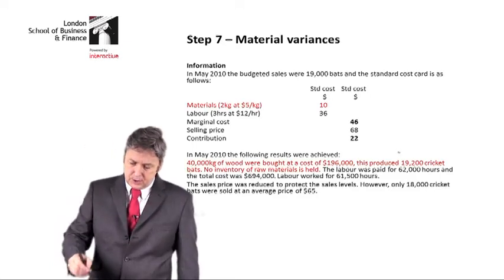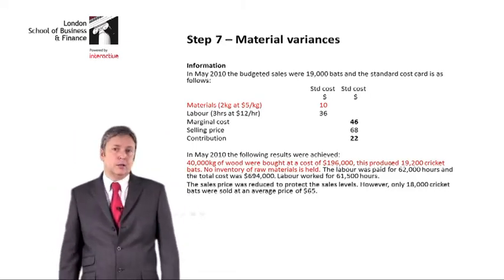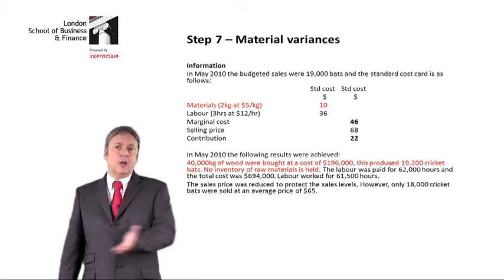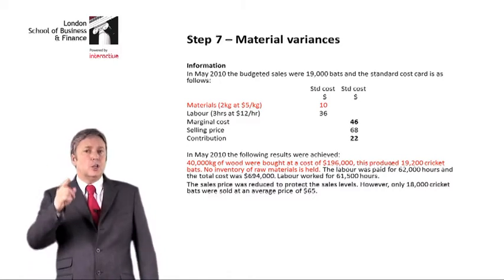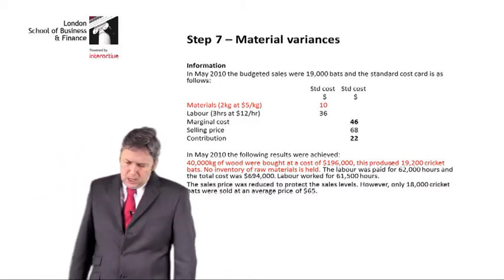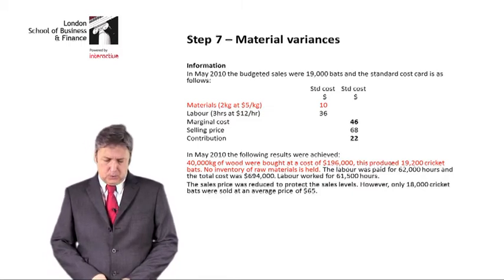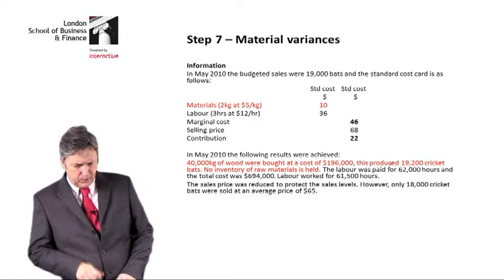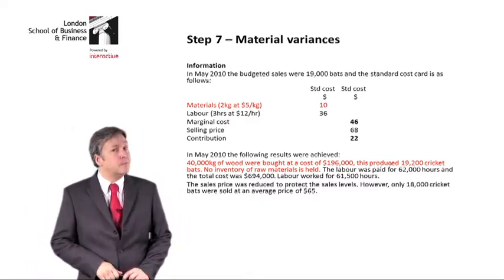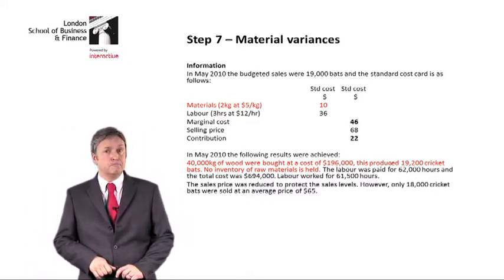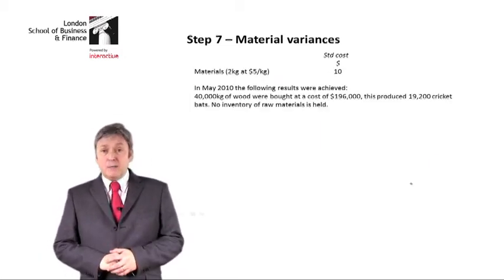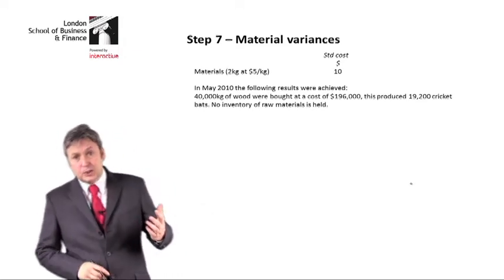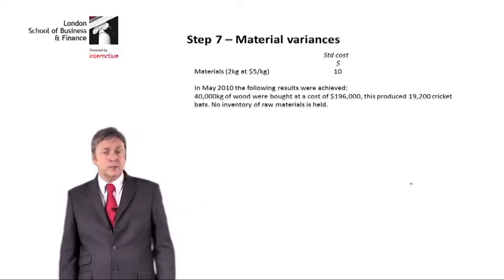What I would like to do is highlight the bits that I am interested in for materials. If you look at the highlighted parts, we have the standards — the standard usage and the standard price. We're also told about the actuals: the amount of wood used, how many units we produced, and the fact that there was no inventory of raw materials. All I've done is take that information and separate it out, because that's the information that we need.